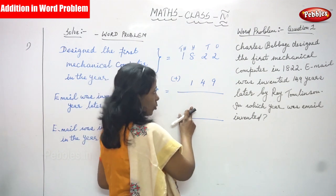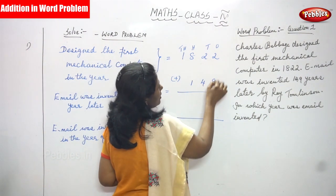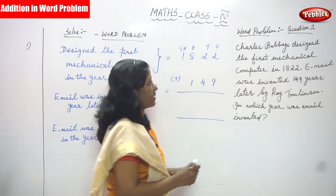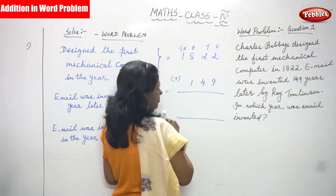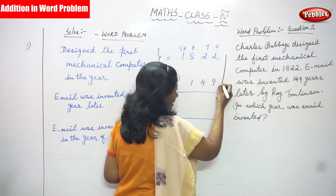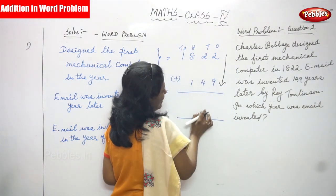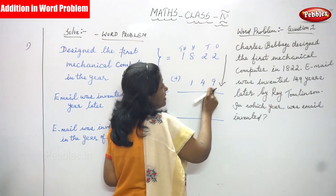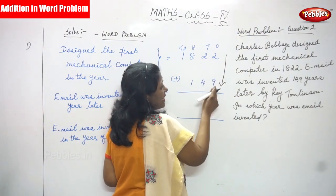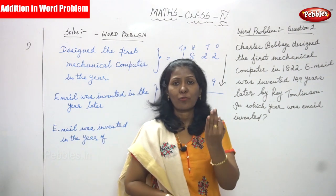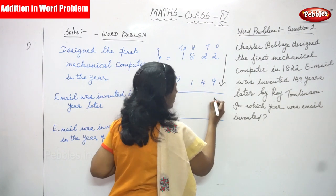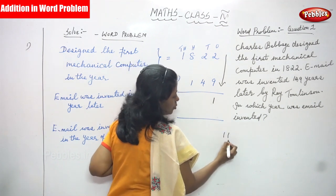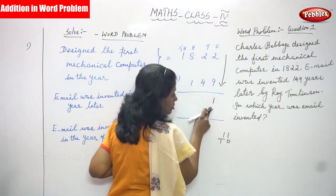First add the ones place, then tens, then hundreds, then thousands. Ones place: two plus nine. First number is two, second number is nine. Two in mind, nine on fingers: three, four, five, six, seven, eight, nine, ten, eleven. So ones place is one, and carry over one goes to the tens place.